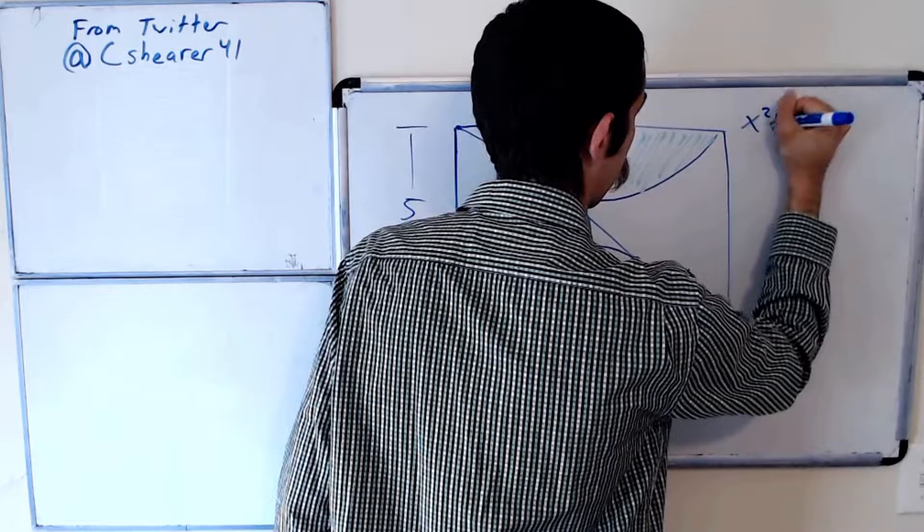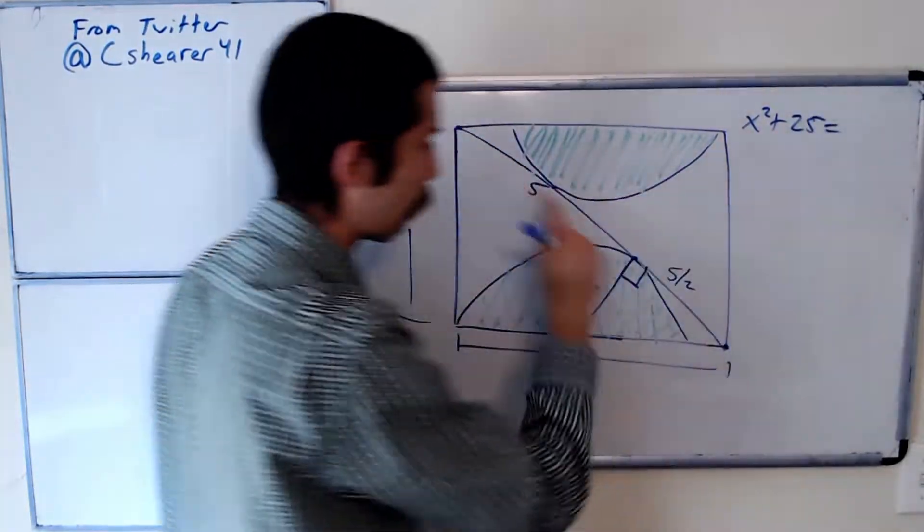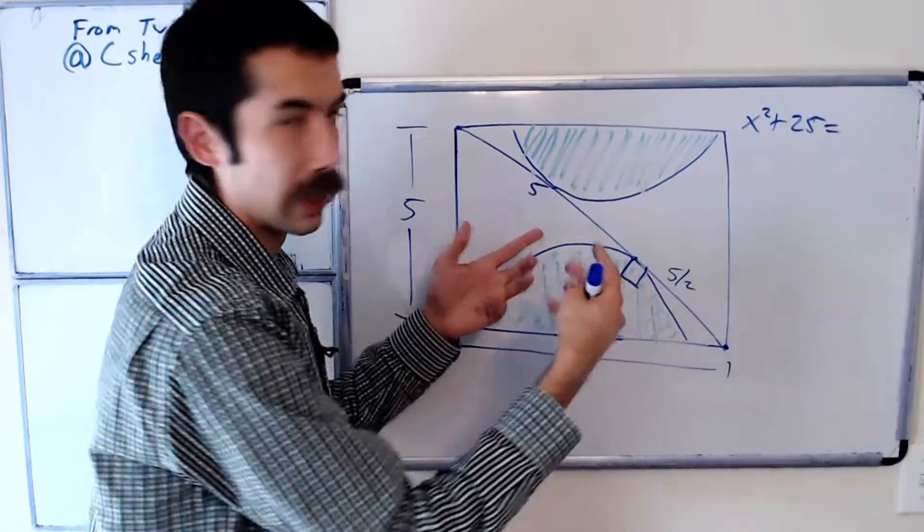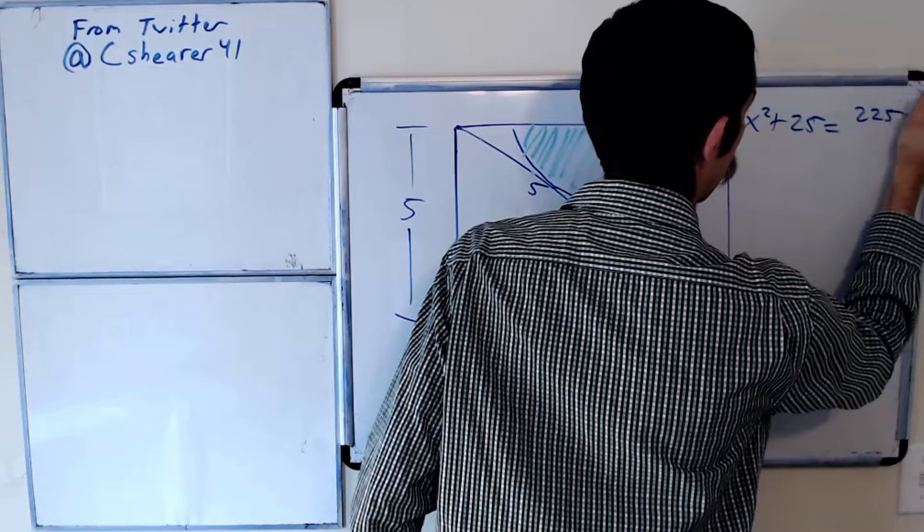X squared plus 5 squared, which is 25, is equal to the hypotenuse squared. The hypotenuse is 15 halves, so hypotenuse squared is 225 over 4.